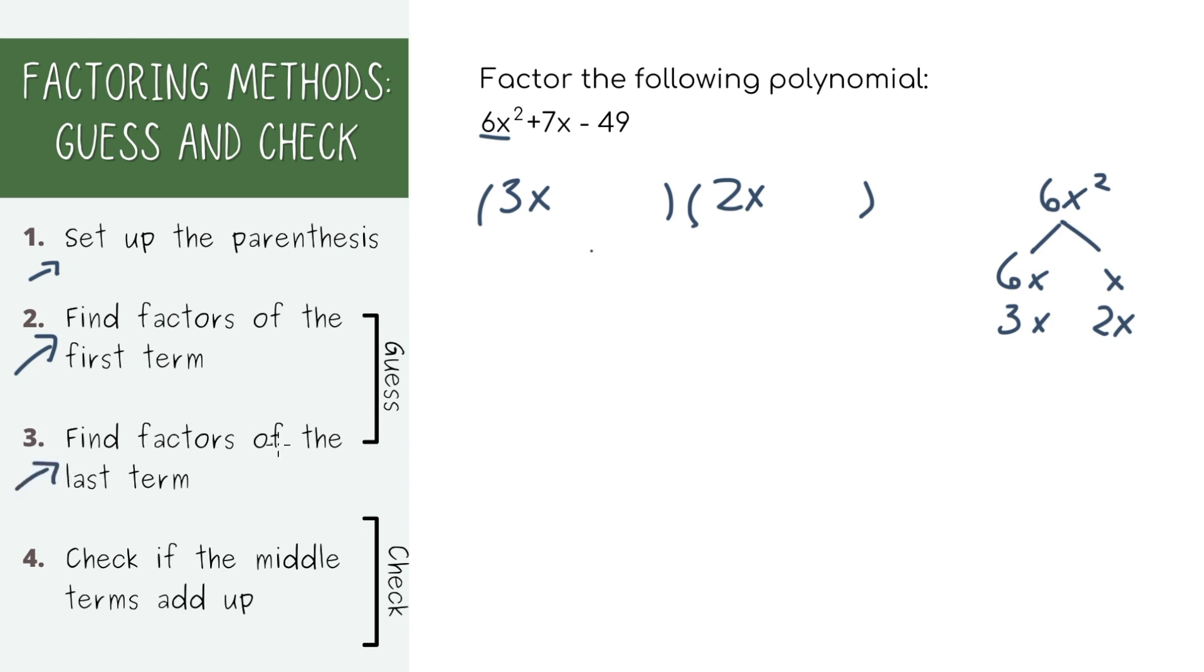Next, let's try to figure out what we can multiply to get to the last term, negative 49. You can think about factors, and it's either 49 times negative 1, or 7 times negative 7. Because the middle number is not super high, I don't think anything is being multiplied by 49, so I'm going to guess that it's 7 and negative 7.